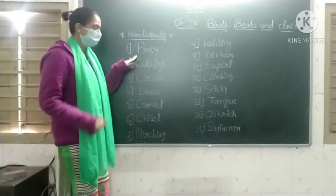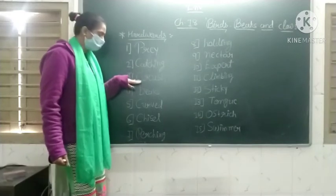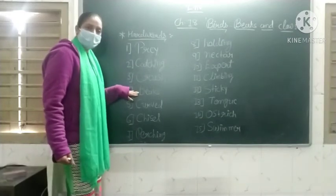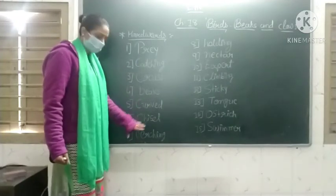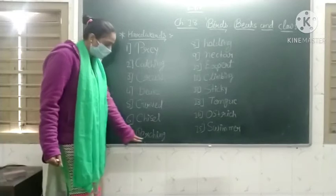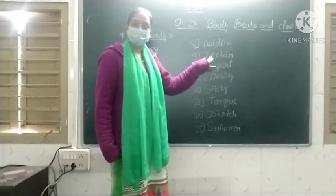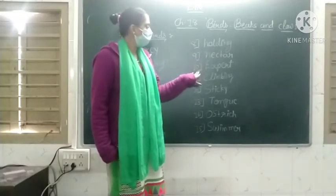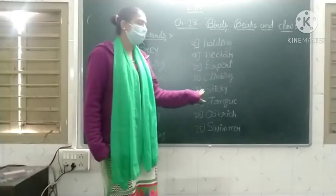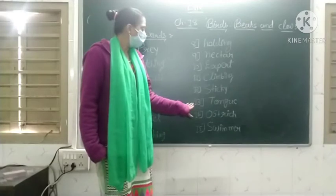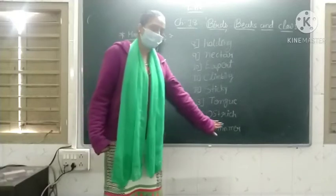So let us try the hard words. Number 1: prey. Number 2: catching. Number 3: crush. Number 4: beaks. Number 5: curved. Number 6: chisel. Number 7: perching. Number 8: holding. Number 9: nectar. Number 10: expert. Number 11: climbing. Number 12: sticky. Number 13: tongue. Number 14: ostrich. Number 15: swimmer.